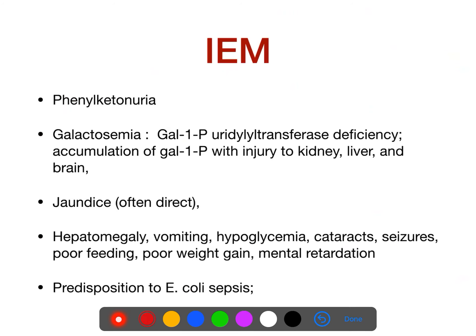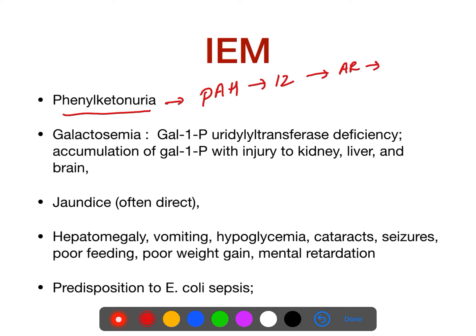IEM — Phenylketonuria: the enzyme defect is phenylalanine hydroxylase. Chromosome involved is chromosome 12. The screening test is the ferric chloride test. The phenylketones are phenylacetate, phenylpyruvate, and phenyllactate.